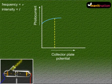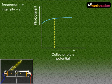If we increase the accelerating potential any further, the photocurrent does not increase. Now this maximum value of the photocurrent is what is known as the saturation current.